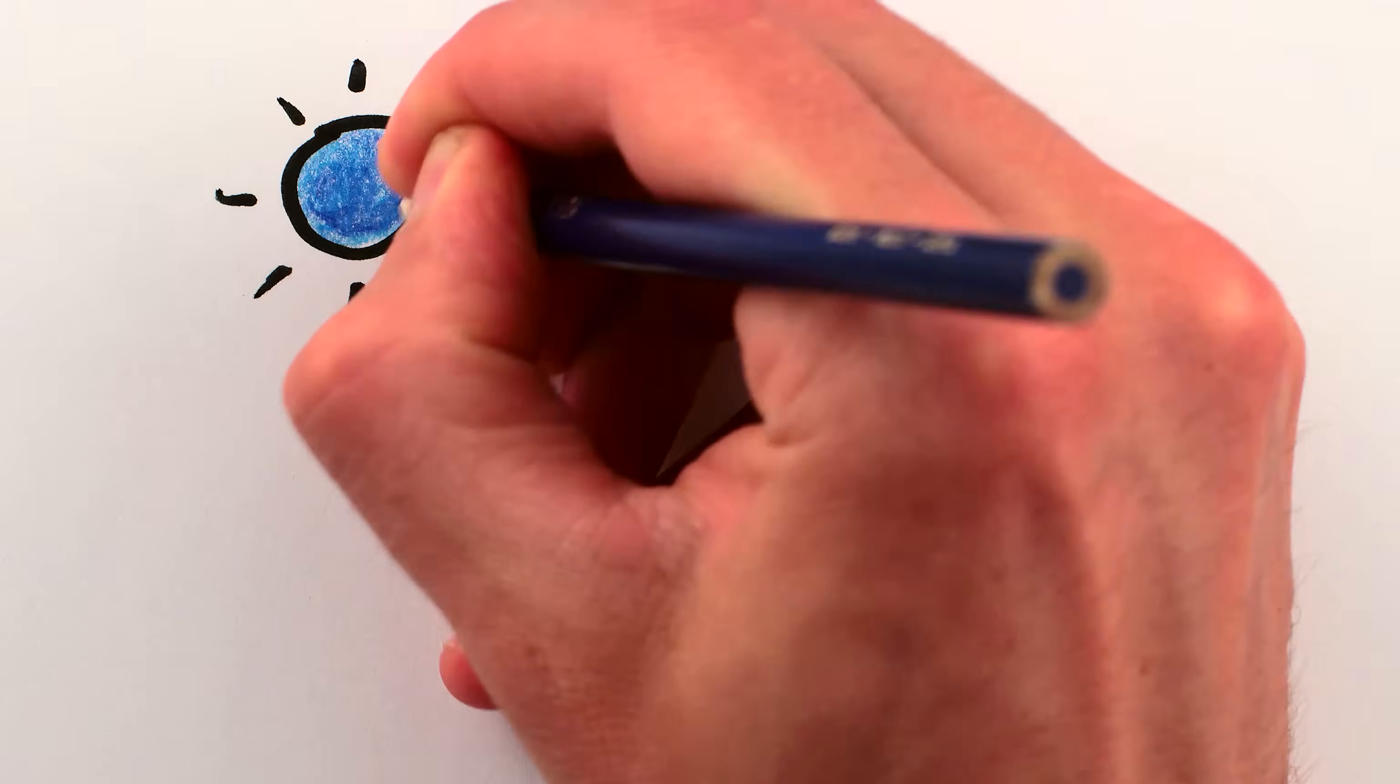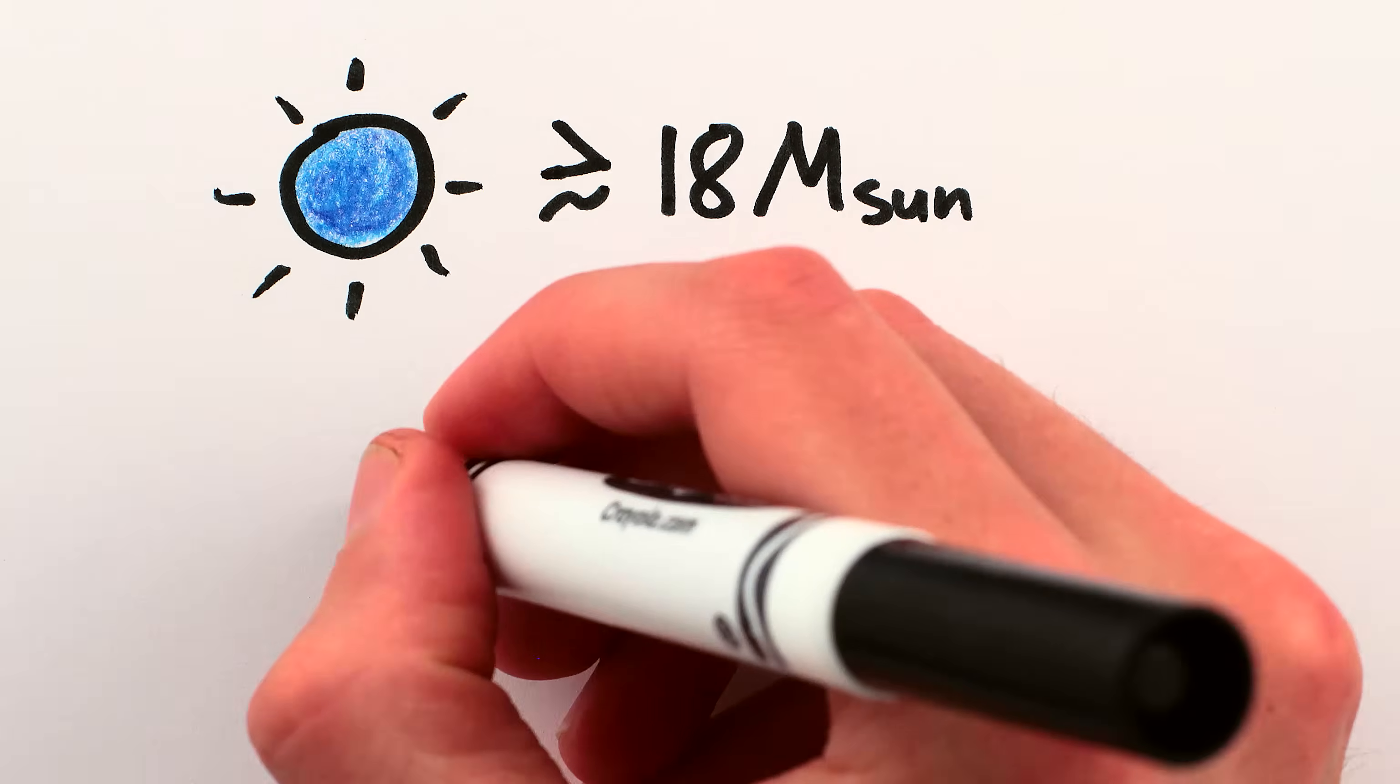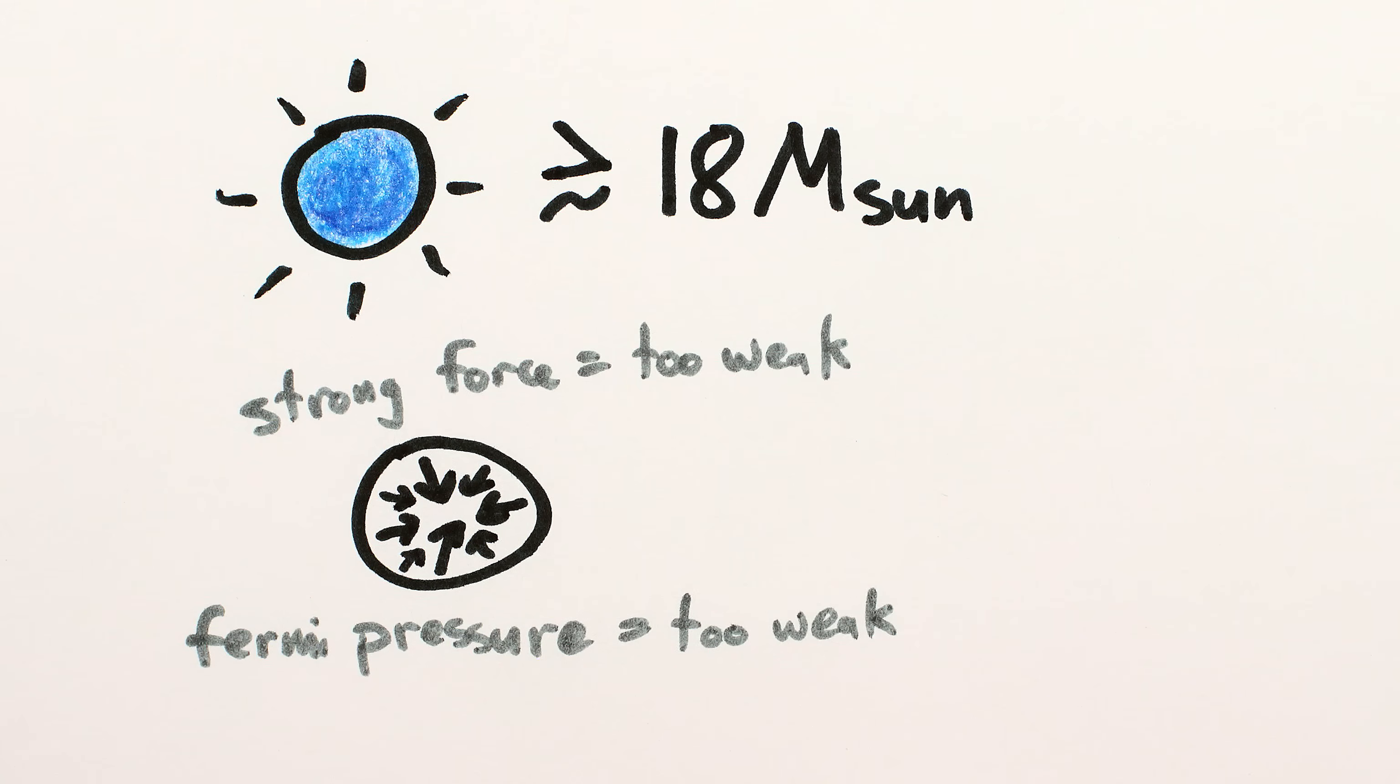If the dying star is yet bigger still, or if two neutron stars collide and merge, its core will be too heavy for either the strong nuclear force or Pauli exclusion principle to hold it up against gravity, and it'll collapse until it's held up by… well, as far as we know there's not anything left to hold up stuff this dense, and it'll collapse into a black hole.